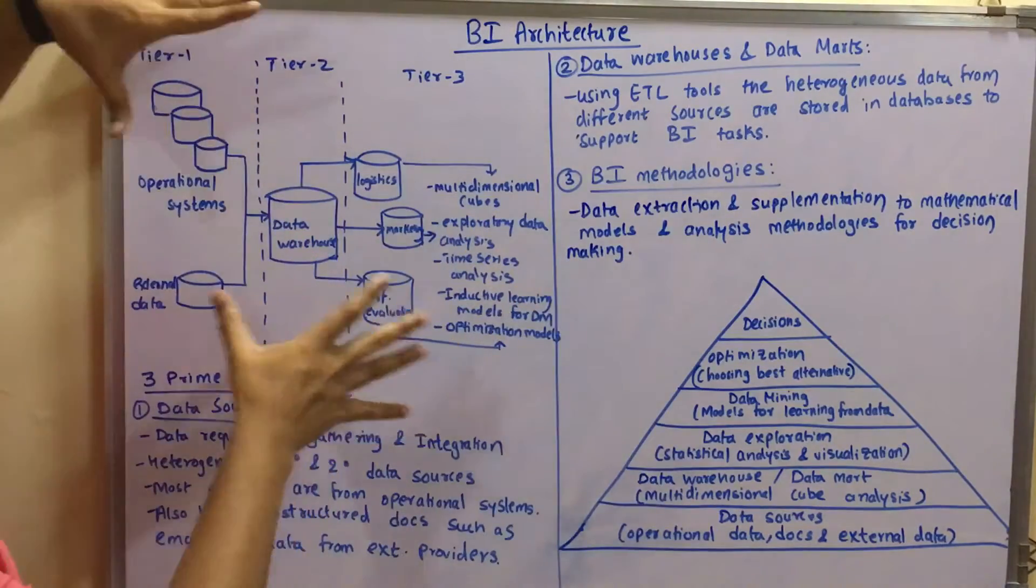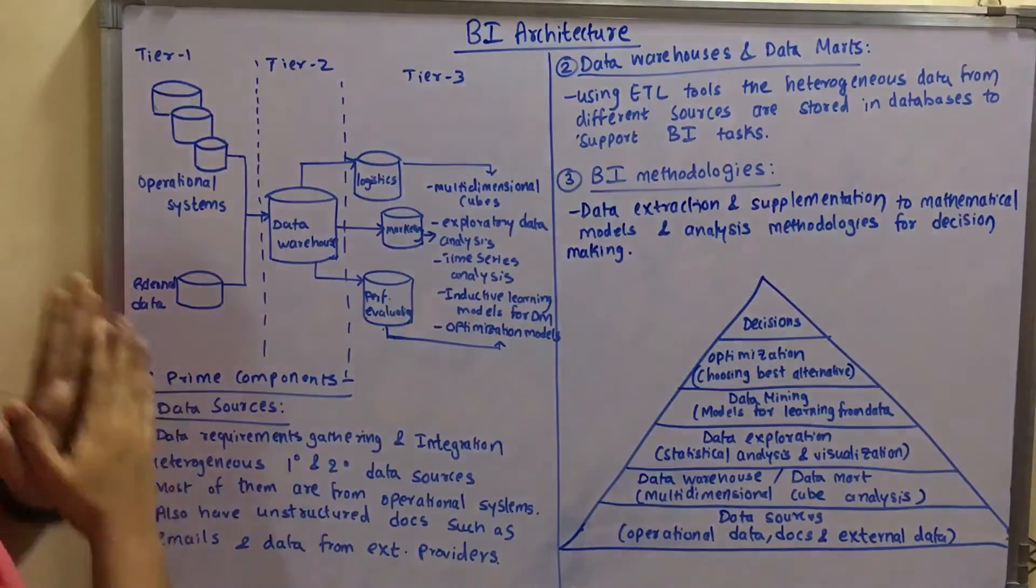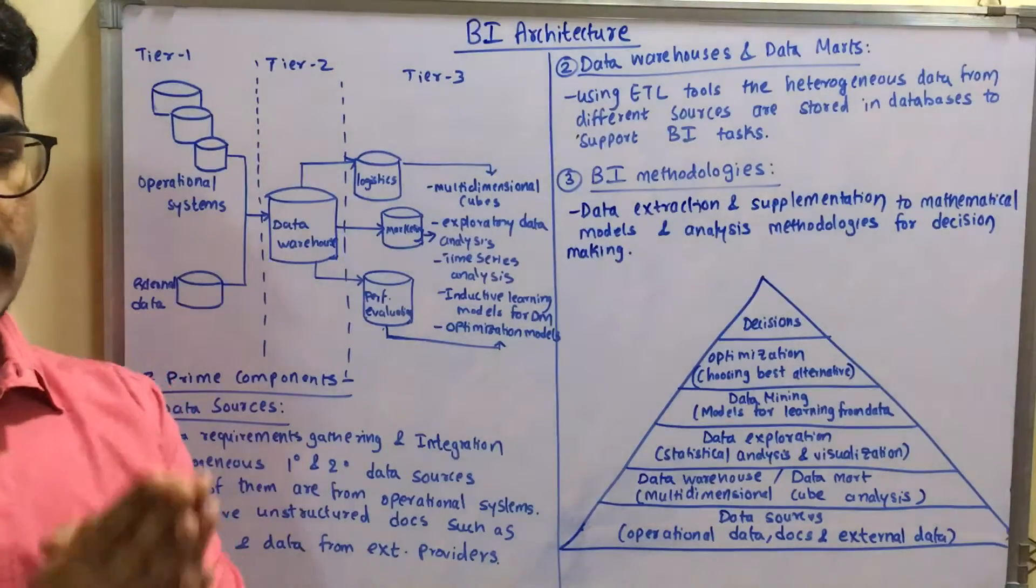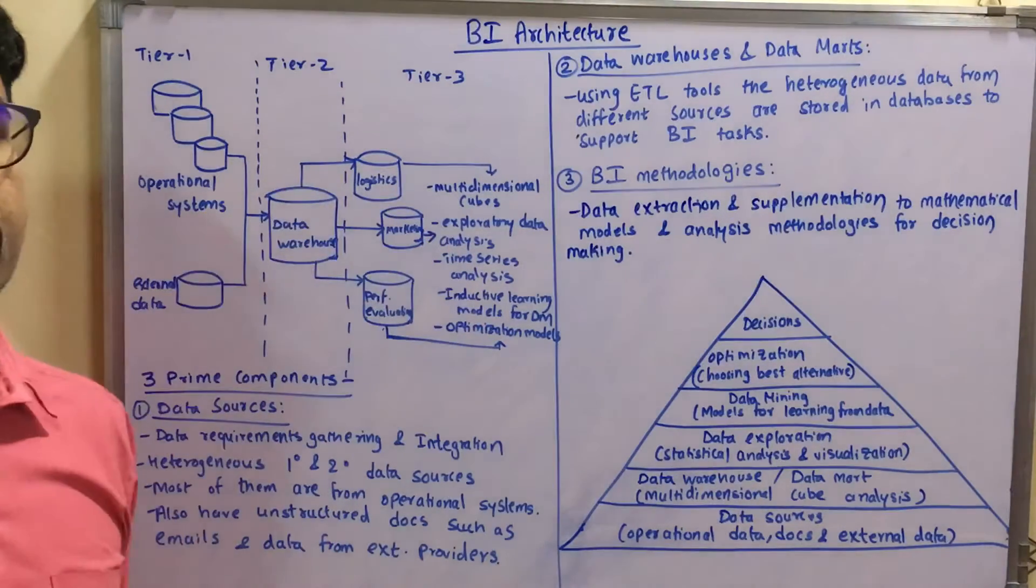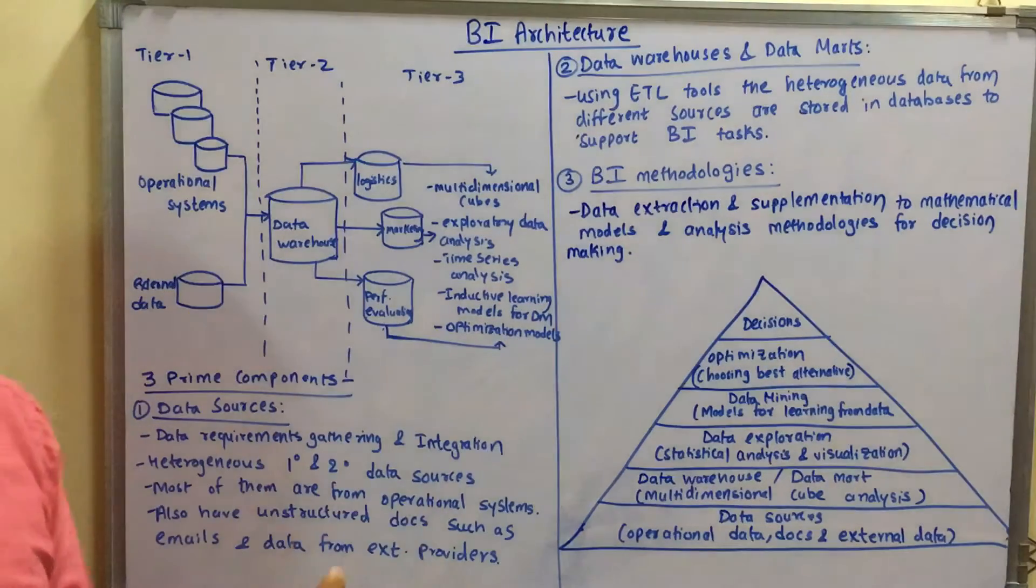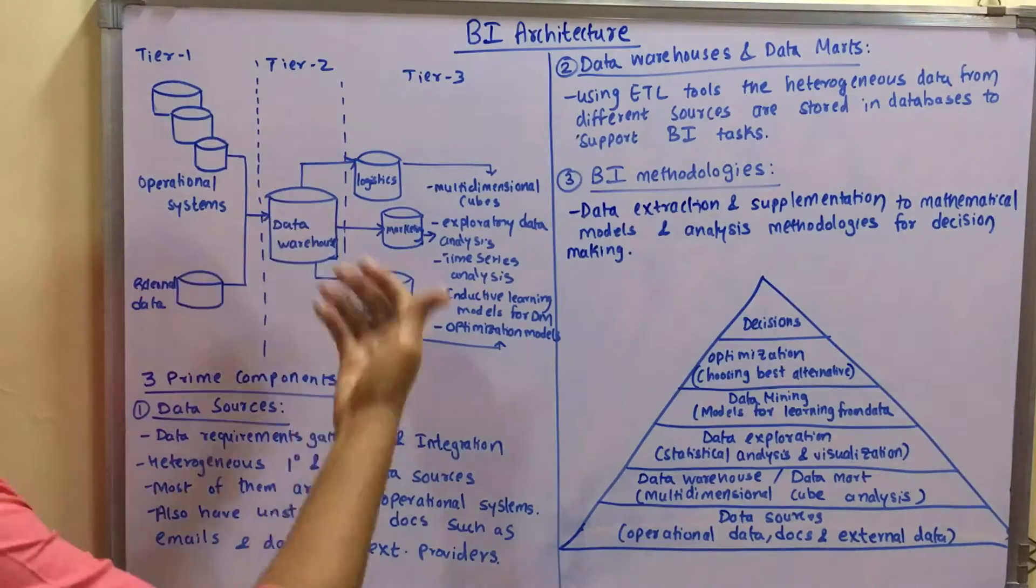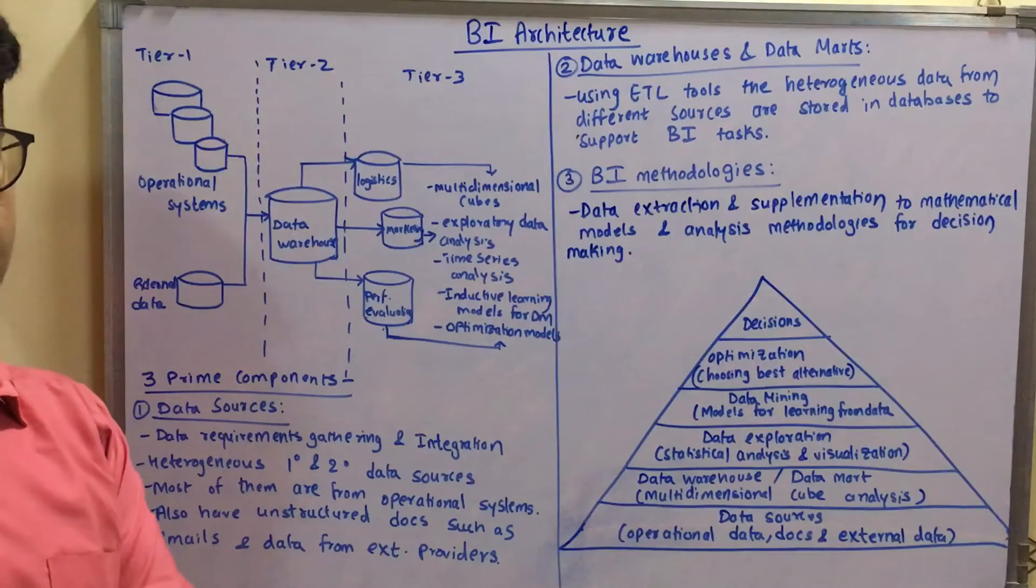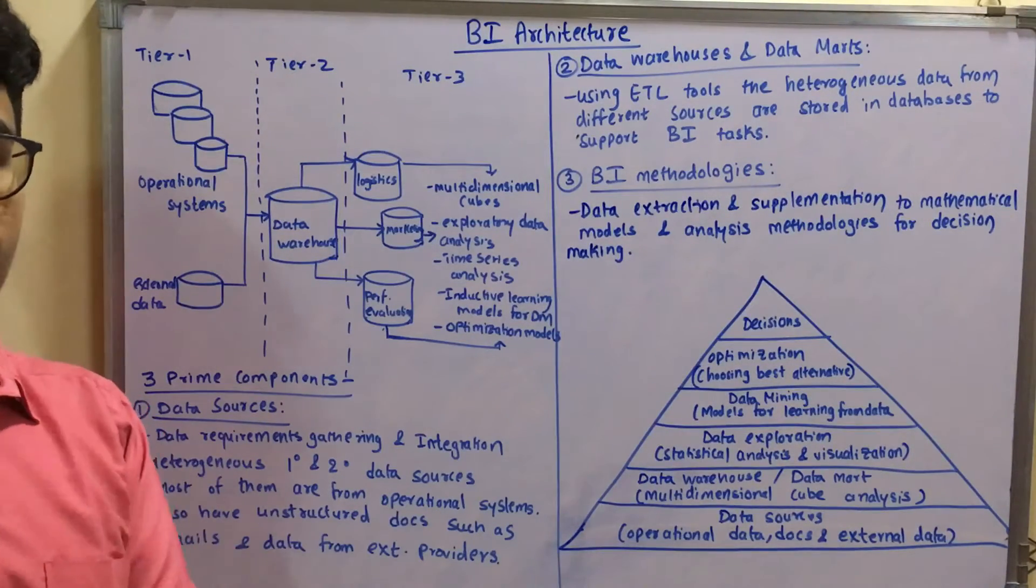So this is how the architecture looks like. We have basically categorized or classified this architecture into three different tiers: Tier 1, Tier 2, and Tier 3. In the very first tier we have operational systems and other external data.